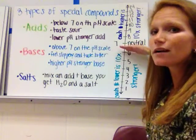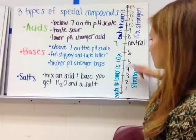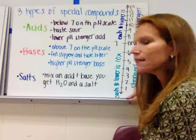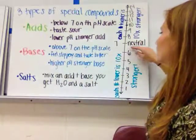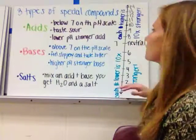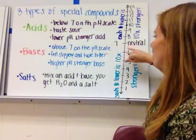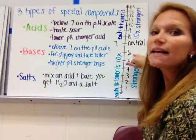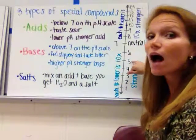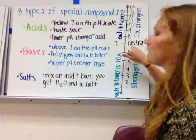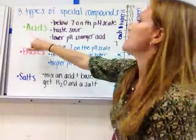As you go down the pH scale toward zero, you're in the acids. Each number on the scale represents a tenfold difference in acidity. So a pH of 6 is ten times more acidic than a pH of 7, a pH of 5 is one hundred times more acidic than 7, and so on — it gets very strong very quickly at the lower end. Acids taste sour, and the lower the pH, the stronger the acid.